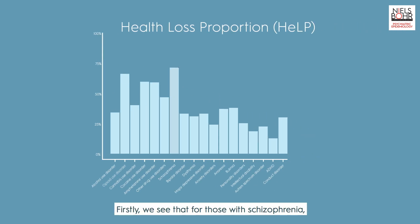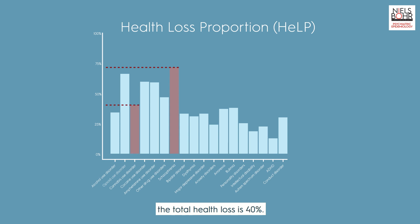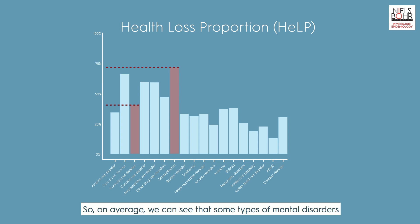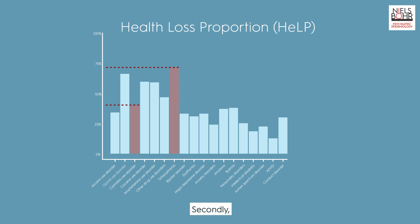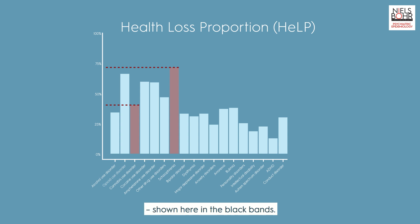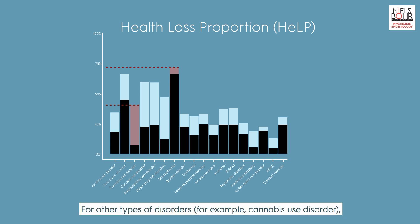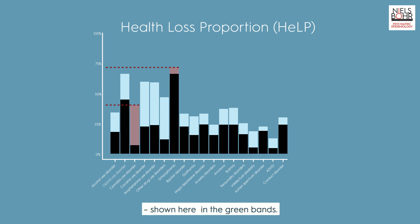Firstly, we see that for those with schizophrenia, the total health loss due to mental disorders is approximately 75%, while for those with cannabis use disorder, the total health loss is 40%. On average, some types of mental disorders have more overall health loss than others. Secondly, for some disorders — for example schizophrenia — most of the health loss is due to the disorder itself, shown here in the black bands. For other disorders — for example cannabis use disorder — most of the health loss comes from other comorbid disorders, shown here in the green bands.